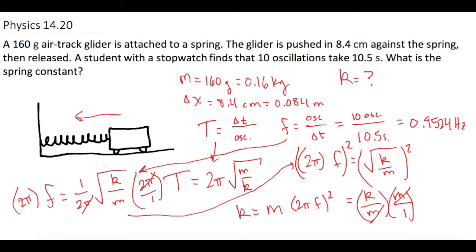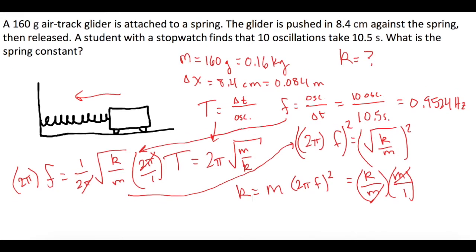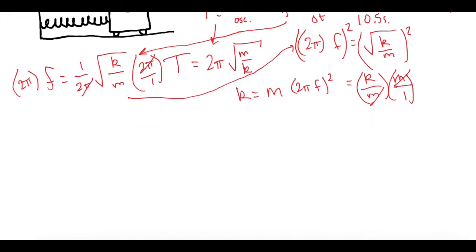Now let's scroll down and plug all of our values in. So k is equal to the mass, which we said was 0.16 kilograms, times 2π times the frequency.